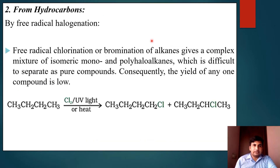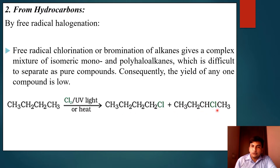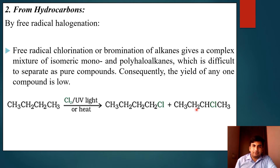From hydrocarbons, by free radical halogenation: butane is treated with chlorine in the presence of UV light. Two mixture products are obtained — free radical chlorination or bromination of alkanes gives a complex mixture of isomeric mono and polyhalides, which is difficult to separate. The products are 1-chlorobutane (minor product) and 2-chlorobutane (major product).